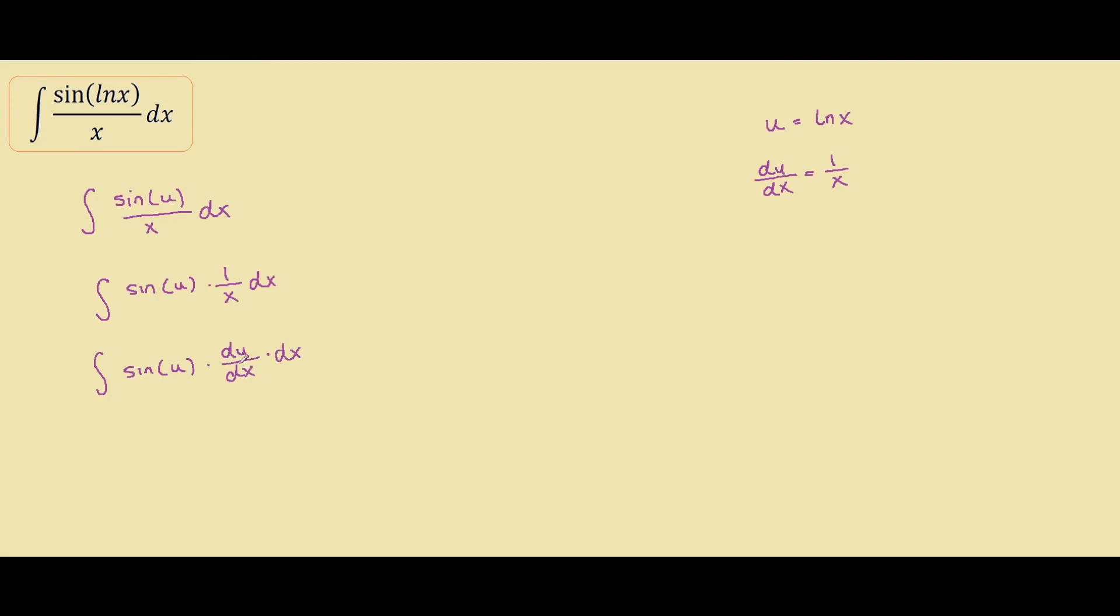All I did was replace this with du dx, so dx cancels out here. We're left with a simple integration of sin u. If we integrate sin u with respect to du, we get negative cos u plus some constant.